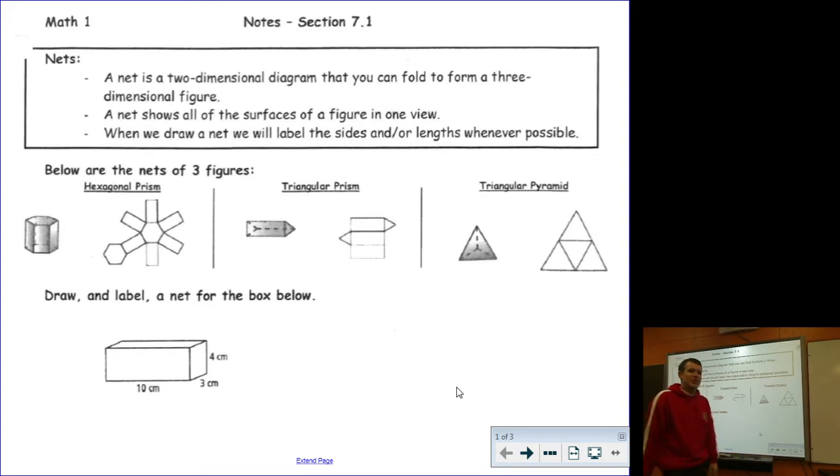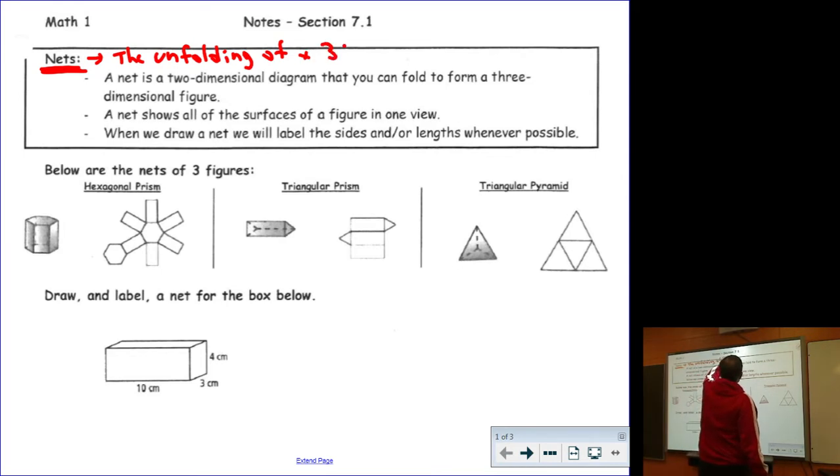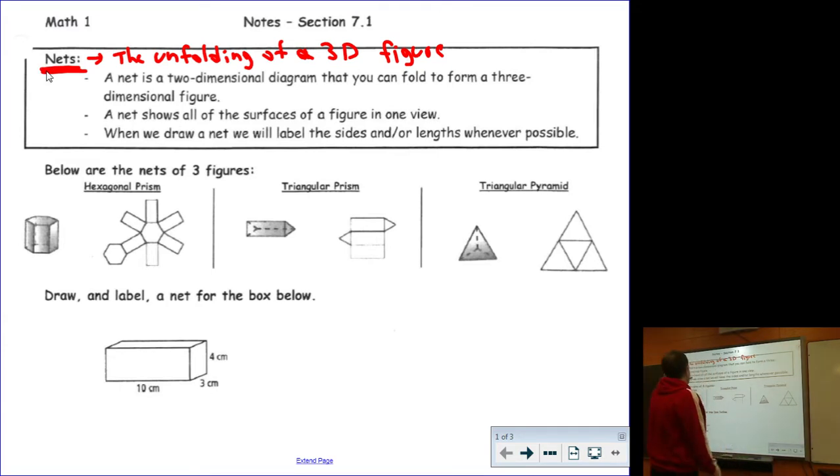Section 7.1, three different drawings. The first drawing is known as a net. A net is the unfolding of a three-dimensional figure. We can take a three-dimensional figure, unfold it, and make it into a two-dimensional diagram. Sewing would be one place where this is commonly used. A net shows all the surfaces in one view. When we draw a net, we will try to label the sizes or lengths.